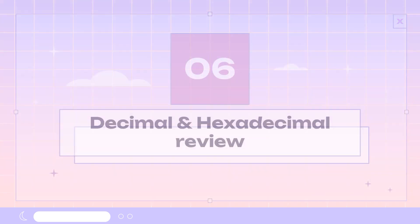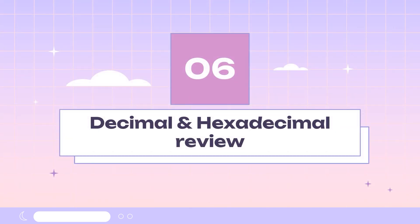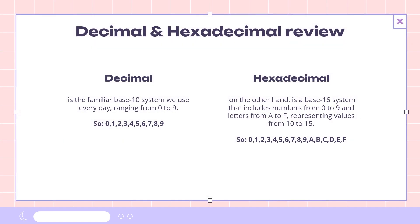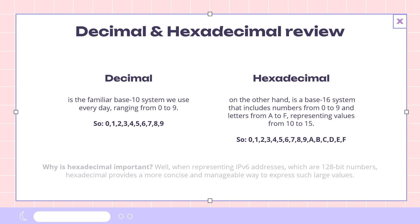Before we delve further into IP addresses, let's do a quick review of decimal and hexadecimal numbering systems. Decimal is the familiar base 10 system we use every day, ranging from 0 to 9. Hexadecimal is a base 16 system that includes numbers from 0 to 9 and letters from A to F, representing values from 10 to 15. When representing IPv6 addresses, which are 128-bit numbers, hexadecimal provides a more concise and manageable way to express such large values.